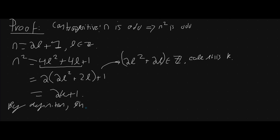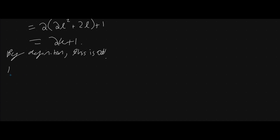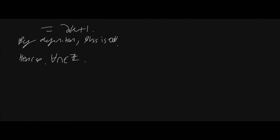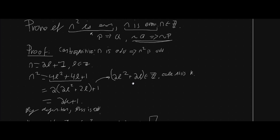This is by definition odd. So we've shown that for all integers n, if n squared is even then n is even. And that is the proof. Thank you for watching — that was quite a nice easy proof today, I hope you enjoyed it.